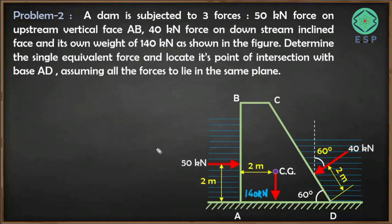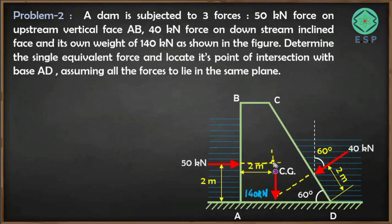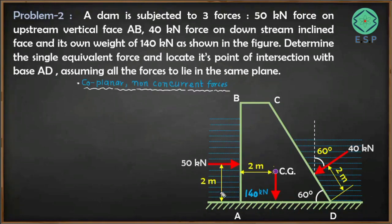If we observe the system carefully, the three forces — 50 kN, 140 kN, and 40 kN — are not concurrent forces, because extending their lines of action shows they intersect at different points. They are in the same plane, so they are coplanar but not concurrent. This is a system of coplanar non-concurrent forces.